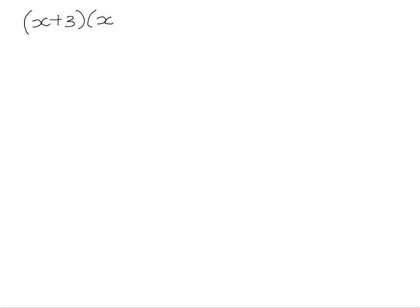The difference of two squares is not the only product that results from multiplying two binomials together. Some binomials in sum-and-difference brackets will give us the difference of two squares, but if we have a pair of binomials that we're multiplying and they're not in sum-and-difference brackets, our product will be what we call a quadratic trinomial.